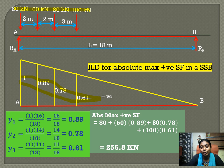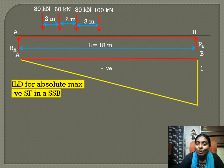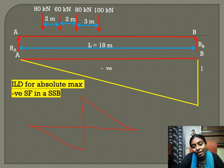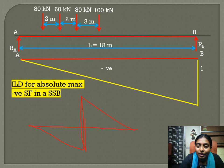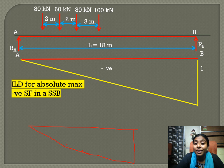Similarly, we find the maximum absolute negative shear force. For a section, the influence line diagram has a negative coordinate, then a positive coordinate, with zero at B. When we move this section towards B, the ordinate becomes 1. So the influence line diagram for absolute negative shear force has an ordinate equal to 1 at B.